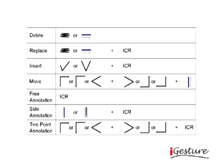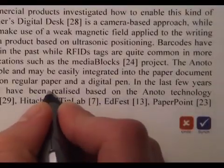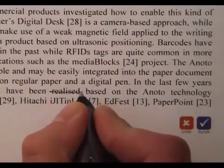PaperProof supports proof editing operations triggered by an ordered sequence of hand-drawn gestures and textual input. We use the iGesture framework and the MyScript Intelligent Character Recognition software to recognize specific gestures. To issue a delete command, the user simply needs to sketch a horizontal line gesture striking through the content to be removed.